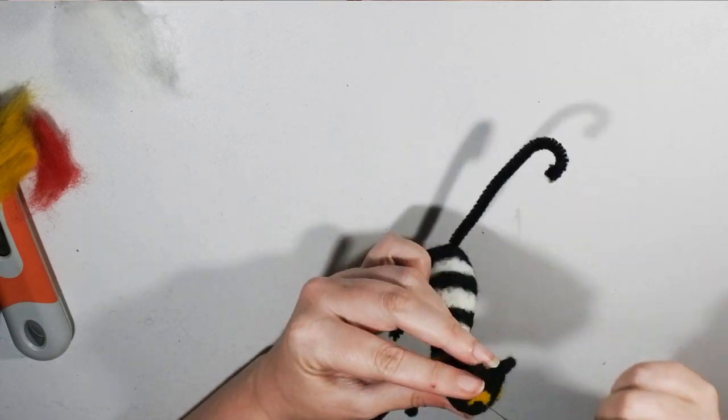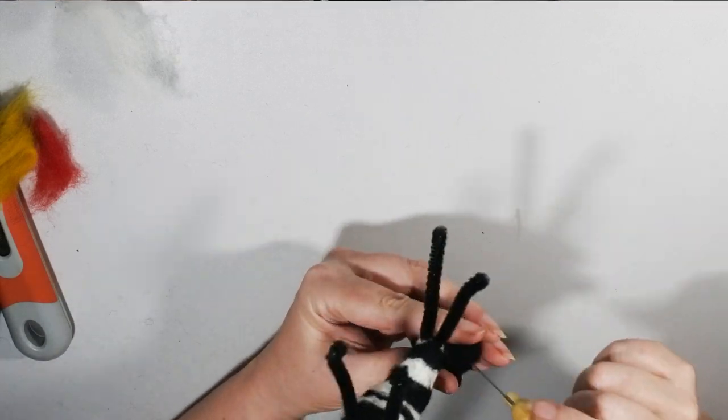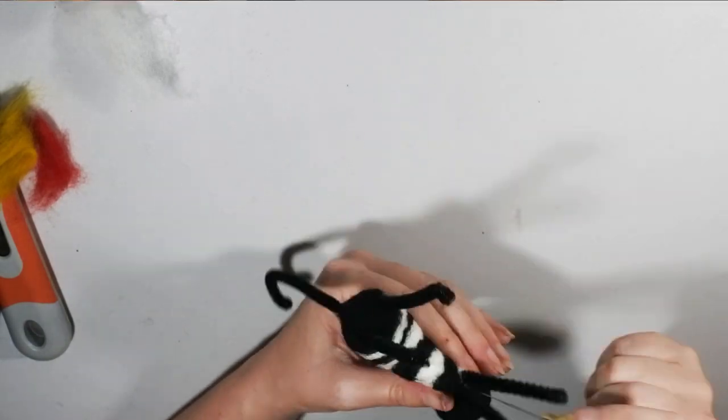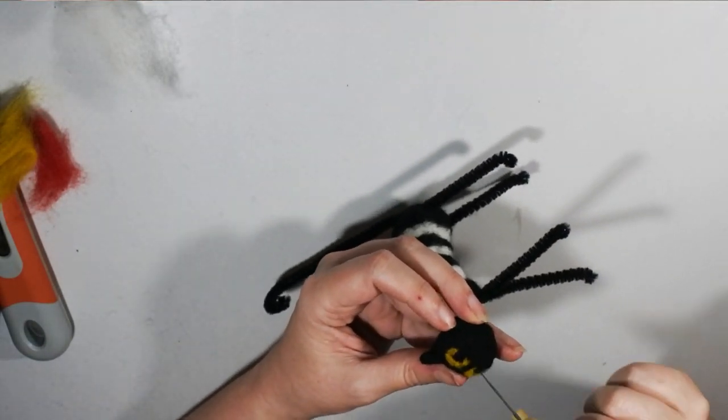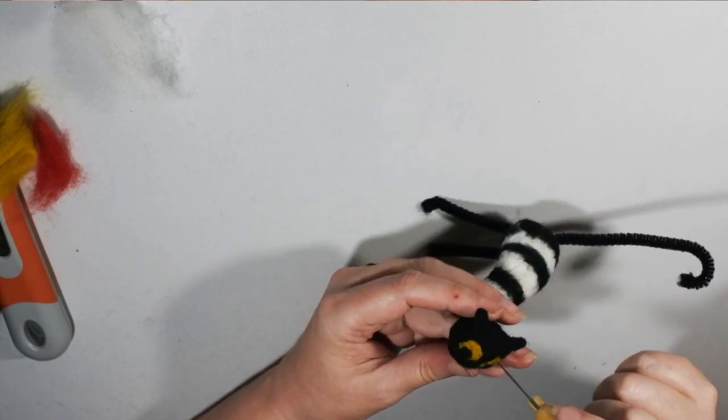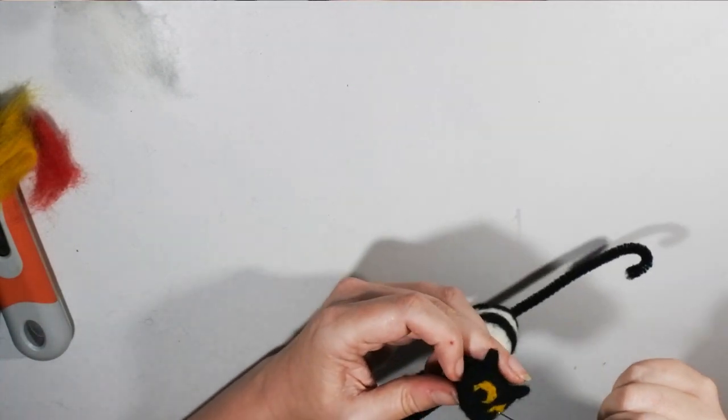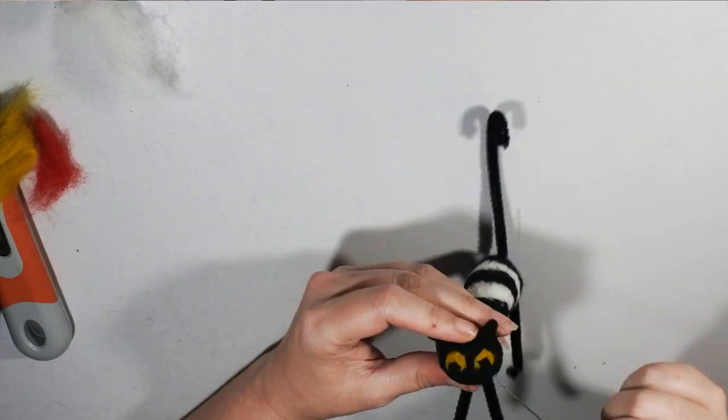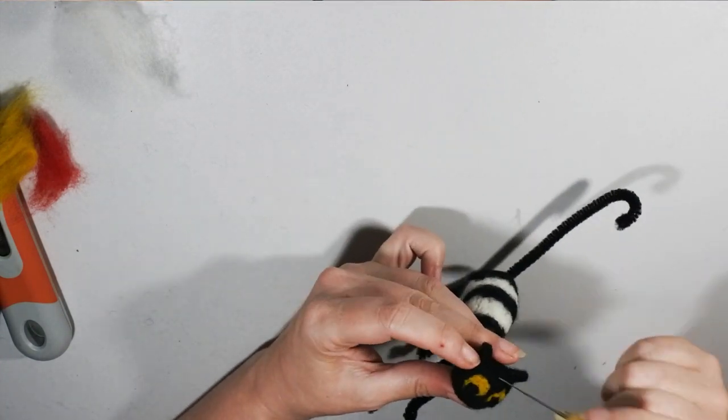Spend as long as you need going around all over this and firming it up, making sure the eyes are nice and clean - the yellow is not going into the black and the black is not going into the yellow. Squish the head between your fingers to get the shape you want. Add more fleece if needed. I'm just going to add some glints of white into the eyes to bring them a little bit to life - tiny balls of white up in the top right hand side.